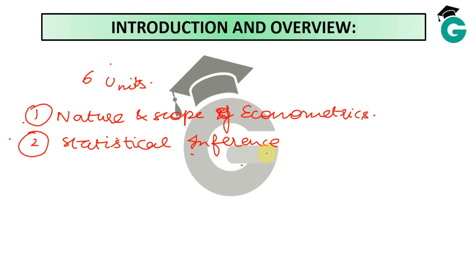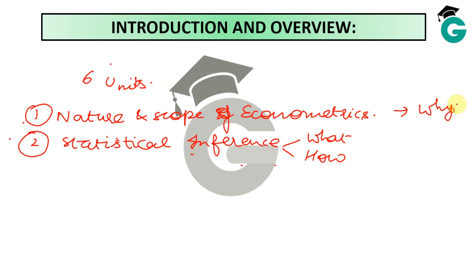In this statistical inference unit, it's like saying that Econometrics kind of begins where statistics ends. Statistical inference would kind of answer the questions of what and how for any data set, and then Econometrics gets to the why part of it. So in this unit, we're going to be recovering concepts which you would need to further use in the rest of the Econometrics course.